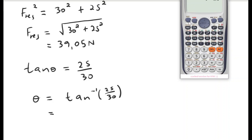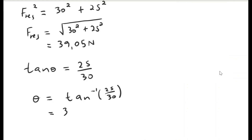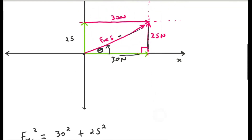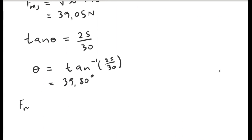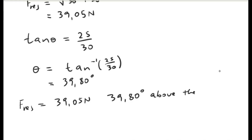Using the calculator with the inverse tan function: tan inverse of 25 divided by 30 equals 39.80 degrees. So the magnitude of the resulting force is 39.05 newtons at 39.80 degrees above the x-axis.